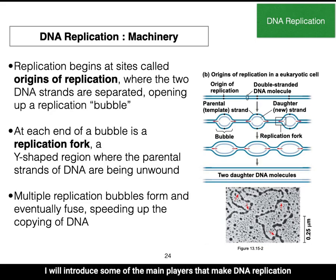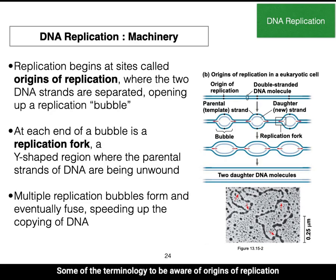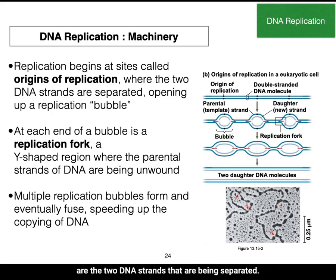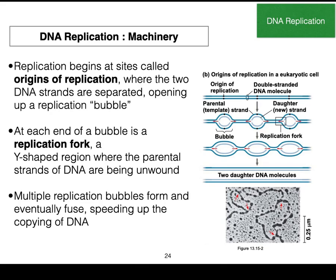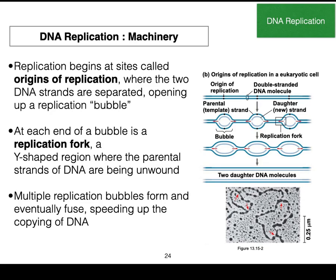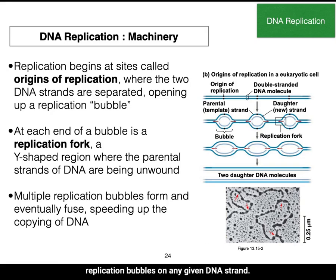In the next few slides, I will introduce some of the main players that make DNA replication possible. Key terminology to be aware of includes: origins of replication, replication fork, and replication bubble. Origins of replication are where the two DNA strands are being separated and start to form a bubble. At the end of each bubble is a Y-shaped region known as the replication fork. Keep in mind that there can be multiple replication bubbles on any given DNA strand.